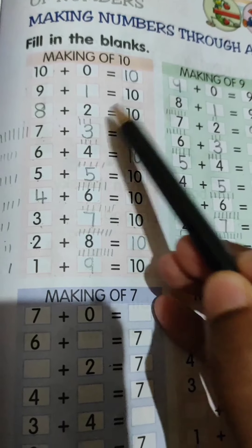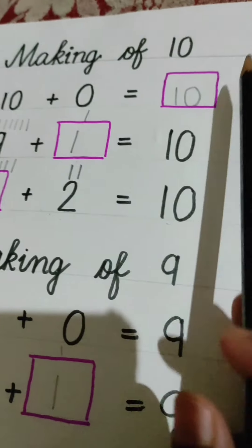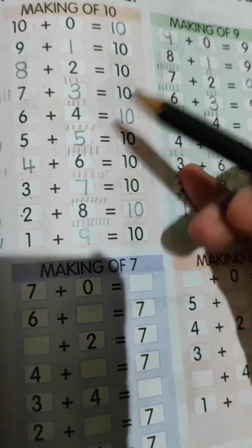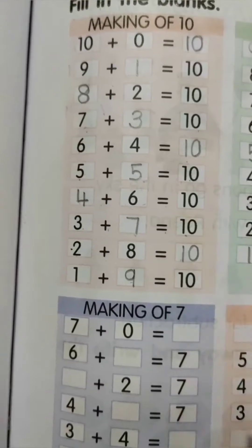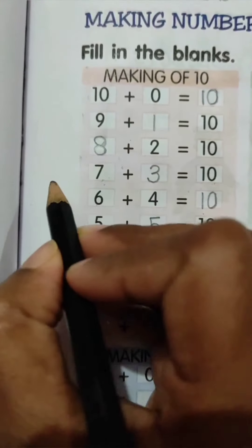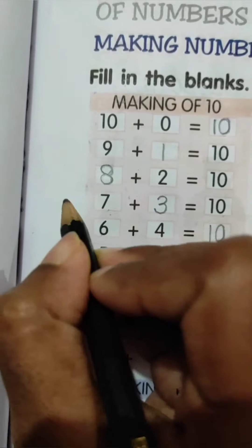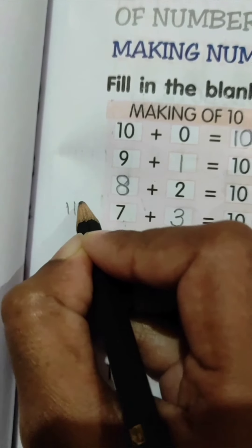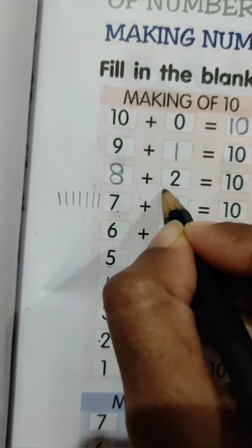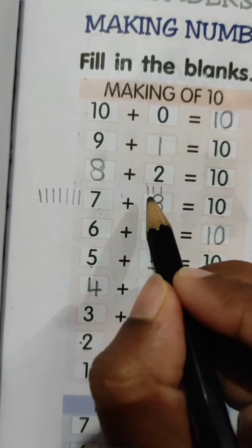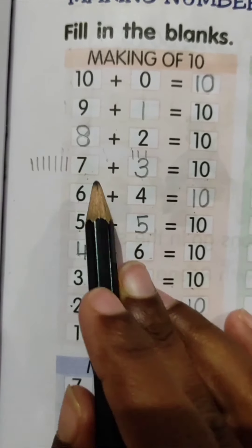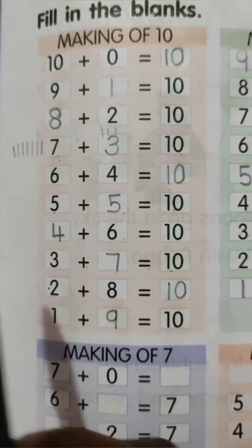So children, first three questions I have explained here. अब आगे के questions हम लोग direct book में solve करेंगे. 7 plus blank is equal to 10. 7 में कितना जोड़ने से 10 बनेगा? उसके लिए पहले हम लोग 7 lines draw करेंगे, then continue up to 10. यहाँ पर कितनी lines हैं? 3. So we will write here 3. 7 plus 3 is equal to 10.